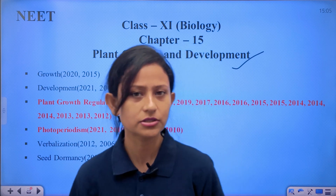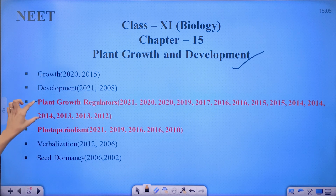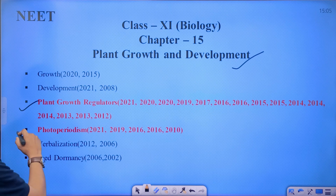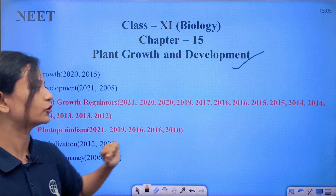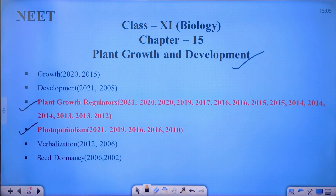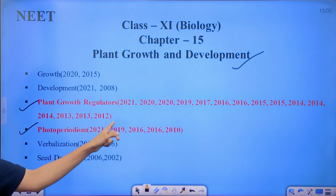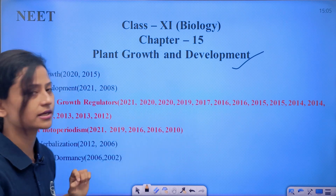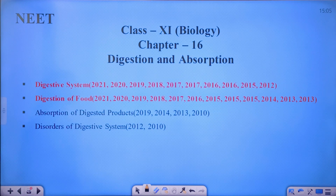Next: Plant Growth and Development. The important topic from a NEET point of view is plant growth regulators, also called plant hormones. Photoperiodism — the relation of sunlight with plant growth — is another important topic. Plant growth regulators are asked very frequently, with many questions from this topic, making it very, very important.